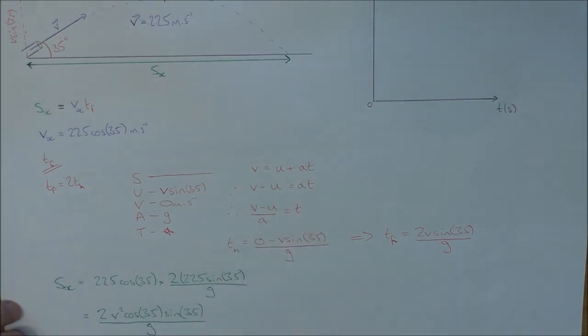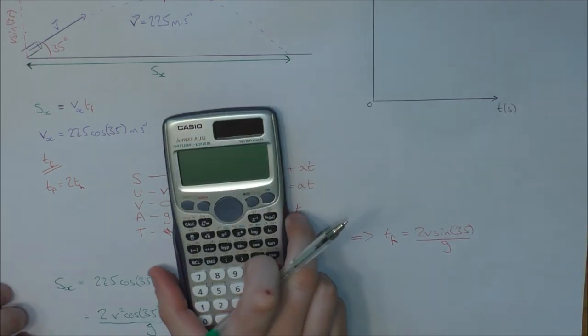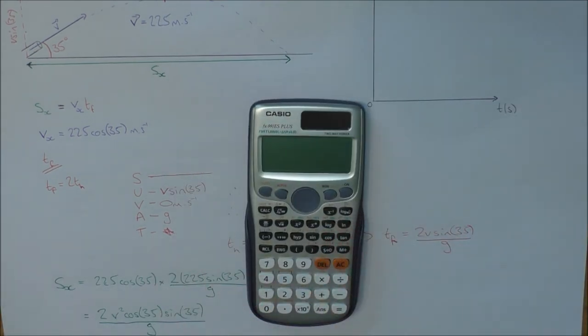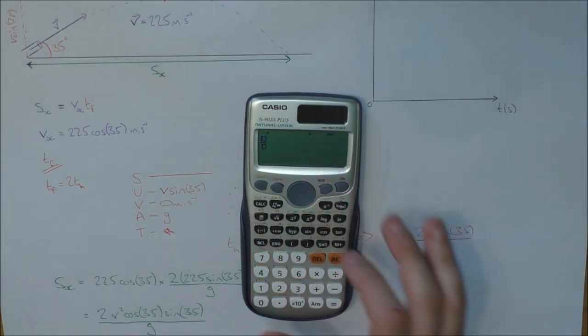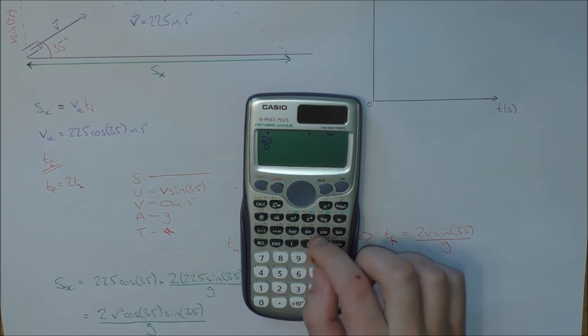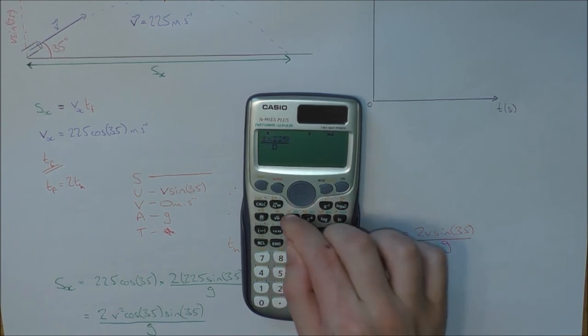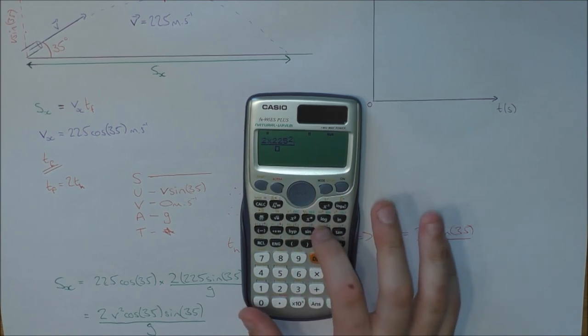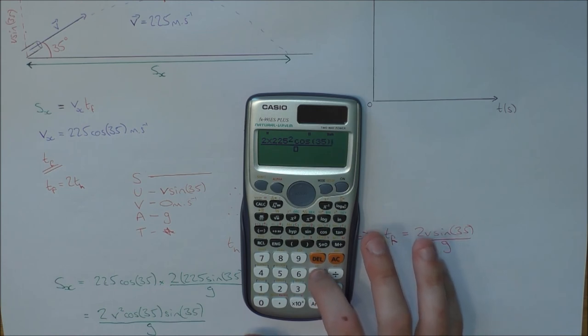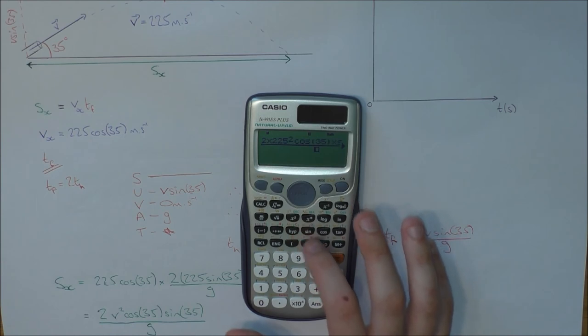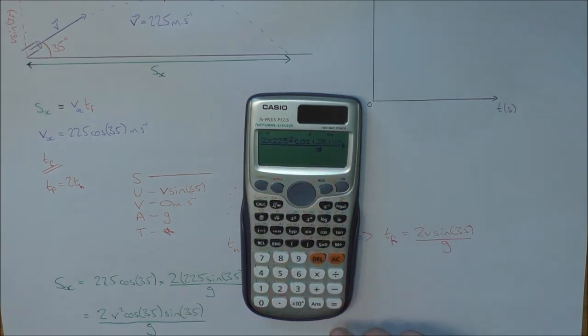Now I've got something that I can put into my calculator because I know the value of V. V is 225. So I'm going to get my calculator back out and plug this thing in. I'm going to push the fraction button first of all because this is a fraction. I'm going to say 2 times 225 squared, so that's V squared, and I'm going to say cos 35 close the bracket, times sine 35 close the bracket, and put that all over little g.